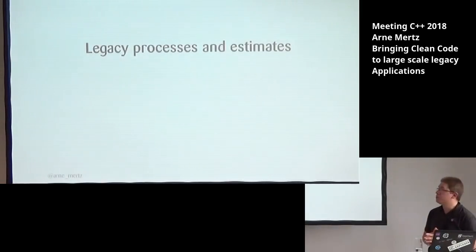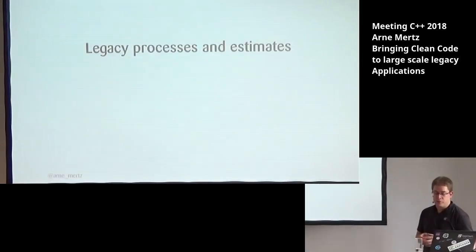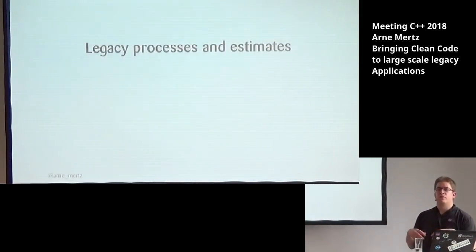With legacy code comes legacy processes. For example, tasks that were already estimated by a business analyst — the developers should estimate the tasks, not someone who says 'it took half a day before, so it'll take half a day now.' You have to take control over the processes and adapt them — retrospectives and inspections of what went well and what didn't, and how to fix processes to get to better code. This is also a really important part of getting the team together to work on the problems.